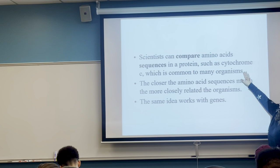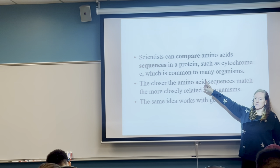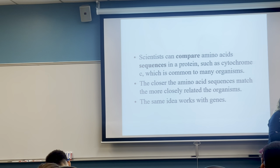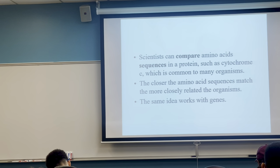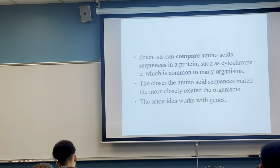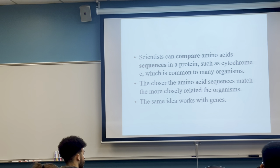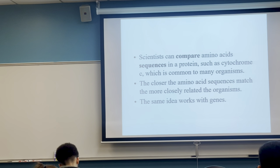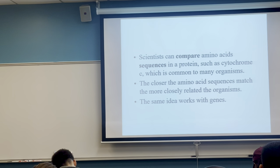This particular protein sequence, cytochrome C, is found in every organism we've sequenced so far. There's evidence that all organisms come from a common ancestor. Thinking about us, an elephant, the tree outside, the mushroom on your pizza, and a bacterium — we all have the cytochrome C protein.